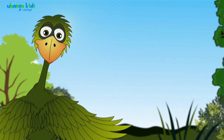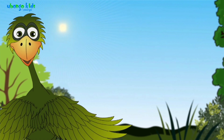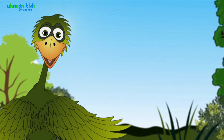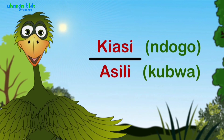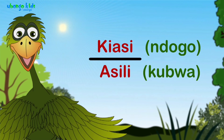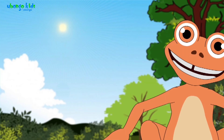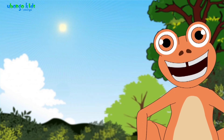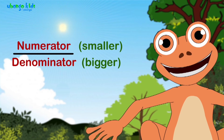Hizi, kwa Kiswahili, zinaitwa sehemu rahisi. Rahisi! Yaani nisemu ambayo kiasi inakuwa ni ndogo kuliko asiri. That's right — it's a fraction where the numerator is less than the denominator.